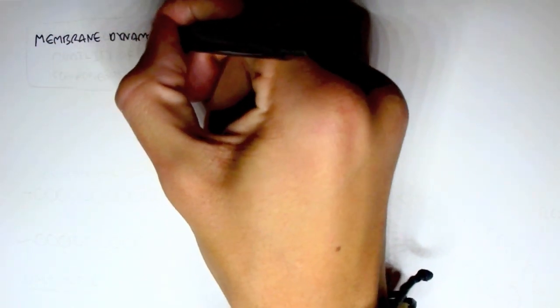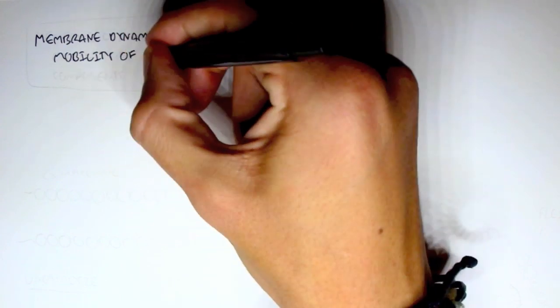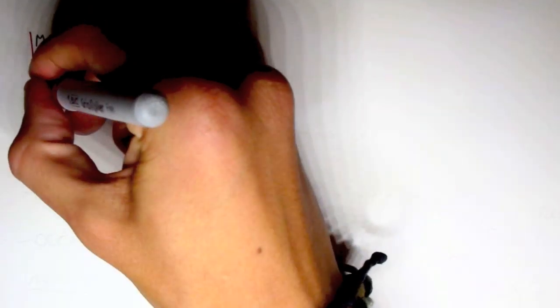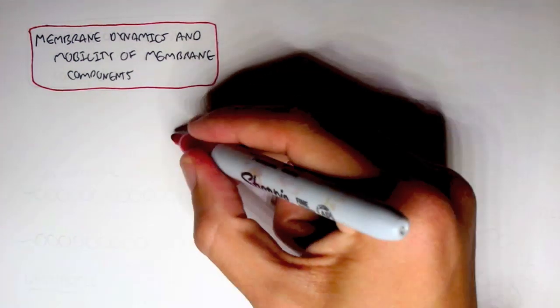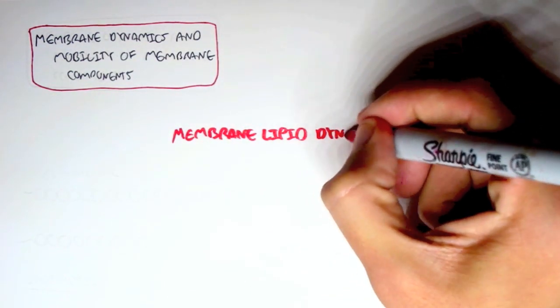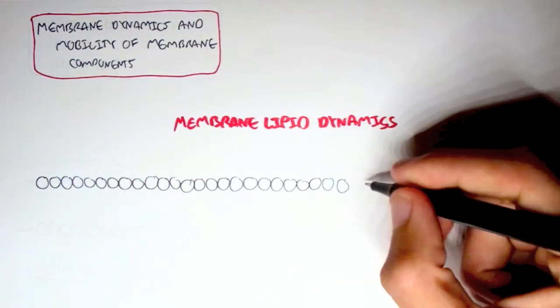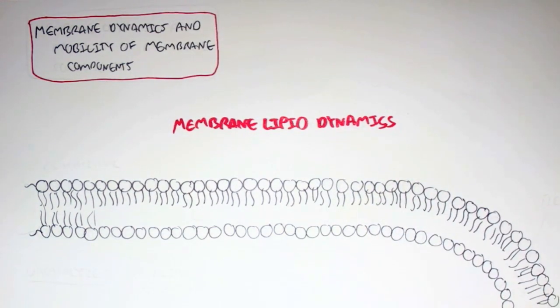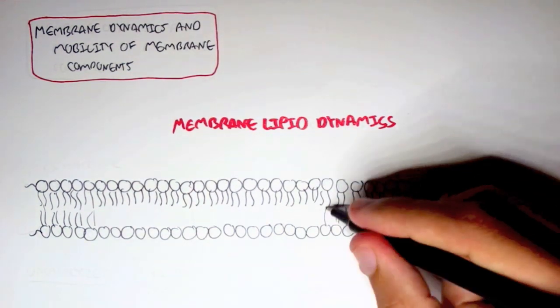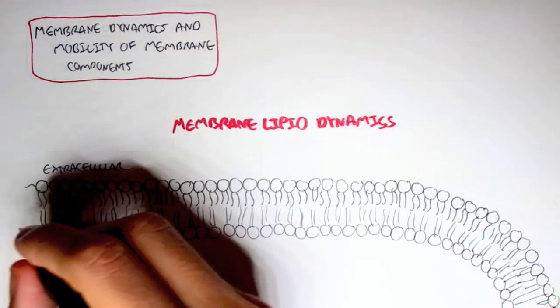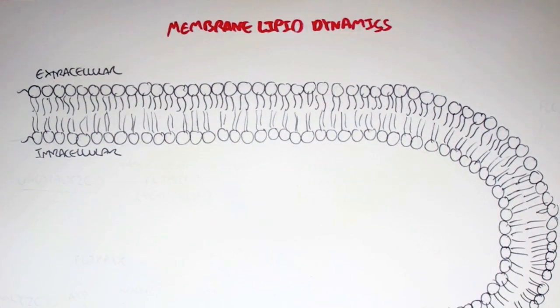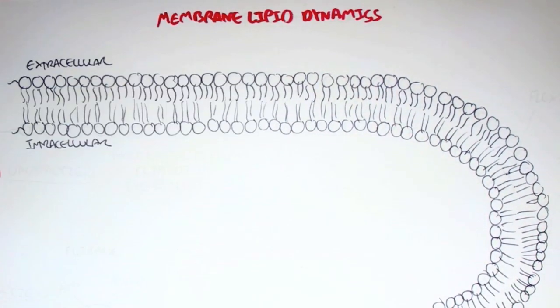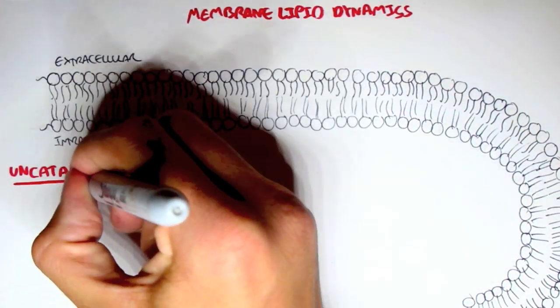Now this is going to be a short video on membrane dynamics and mobility of membrane components. So how components within the cell membrane move around. We talked about cholesterol before moving around. Now we can talk about the lipids moving around. So membrane lipid dynamics. So here I'll draw the lipid bilayer again. We have the extracellular fluid here outside and the intracellular fluid the inside.